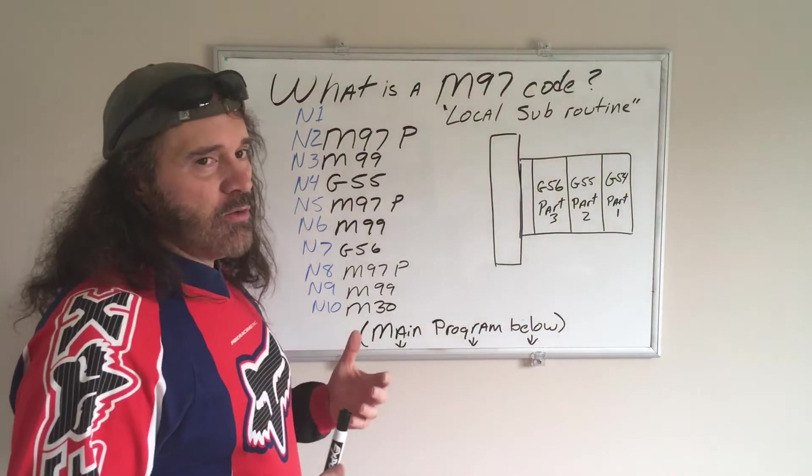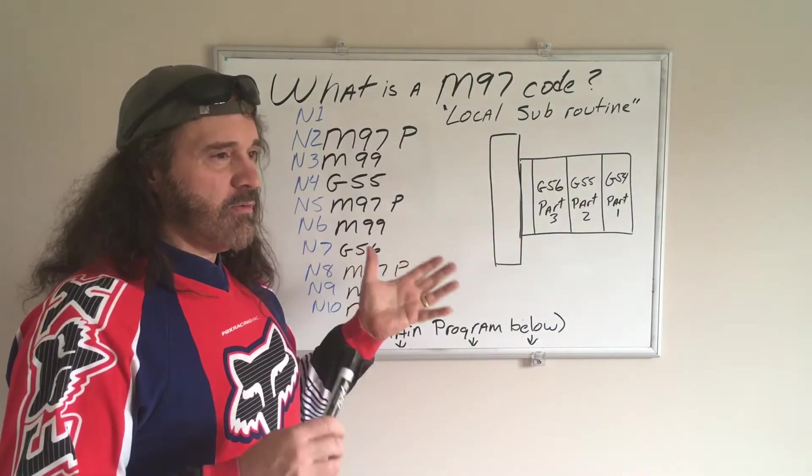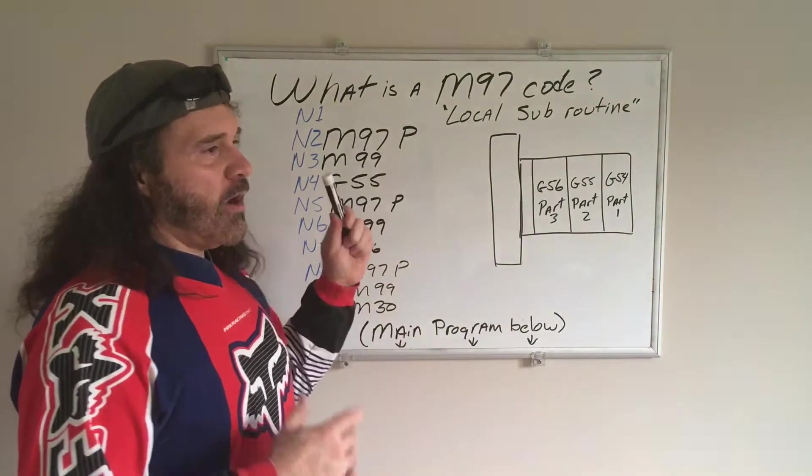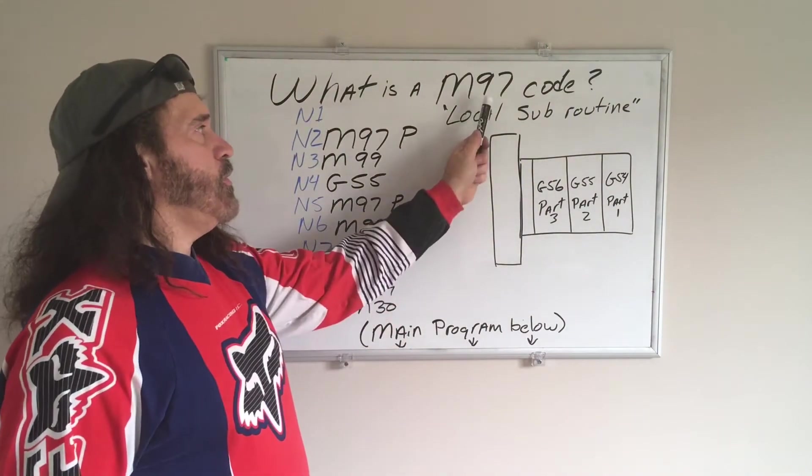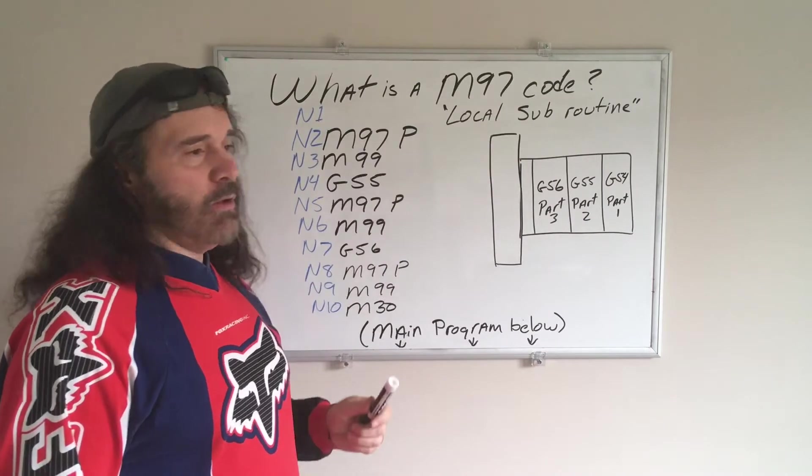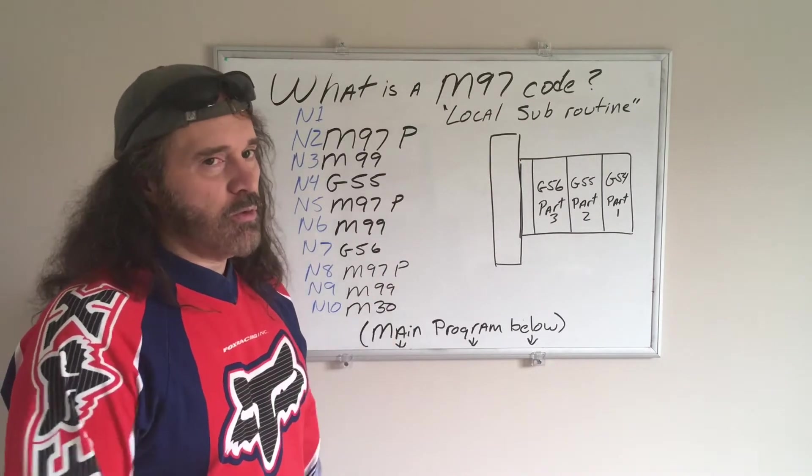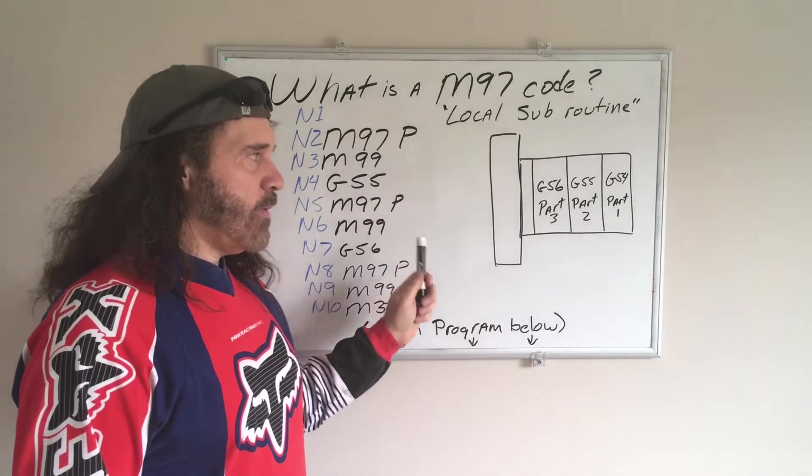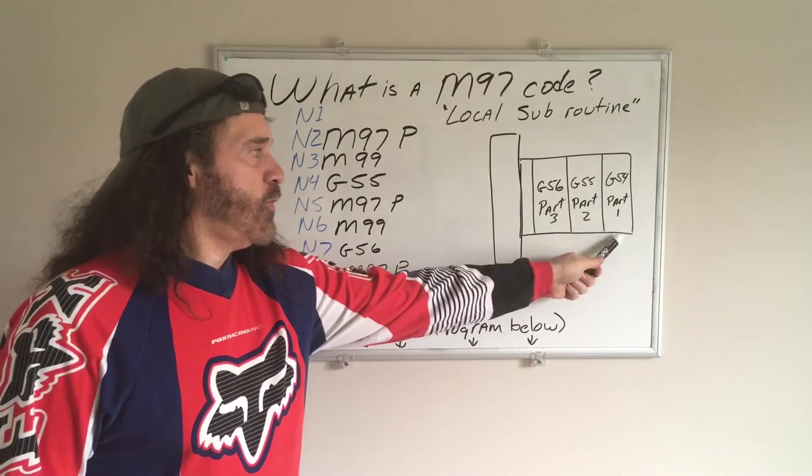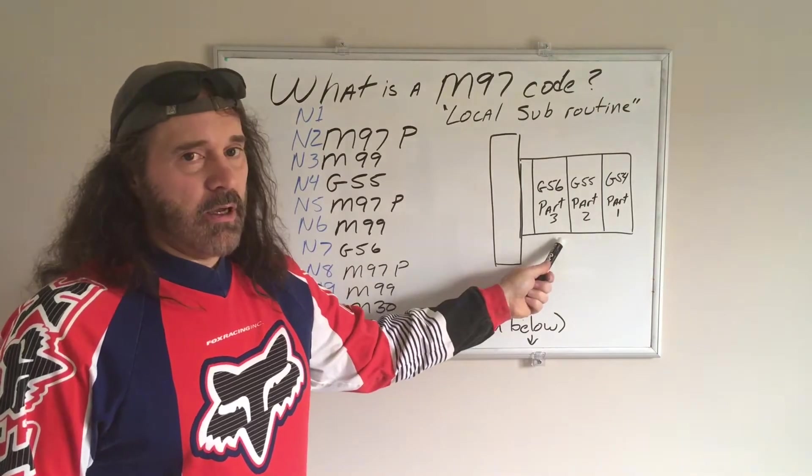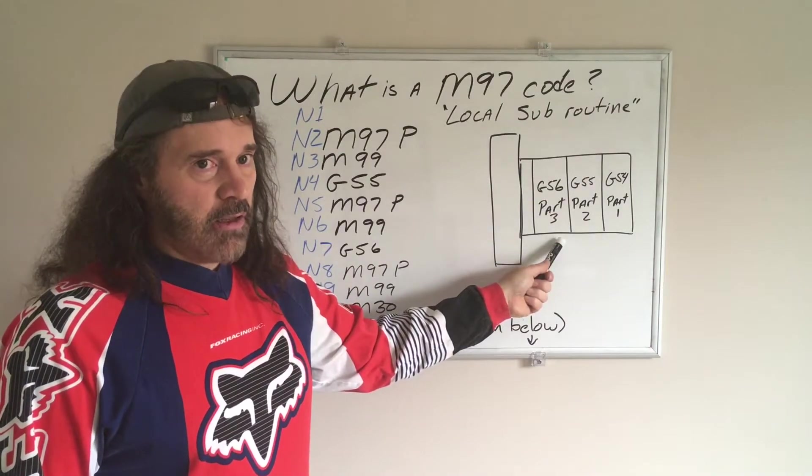So I'm going to try and do this kind of quick without making it super complicated. So how do you use an M97 call? There's a lot of ways to do it. In this demonstration only, I'm just going to pretend that you are doing three parts on a lathe.